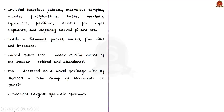The city had luxurious palaces, marvelous temples, massive fortifications, markets, aqueducts, stables for royal elephants, and elegantly carved pillars. It was also known for its trade in diamonds, pearls, horses, fine silk, and brocades. But in 1565, it came under Muslim rulers of the Deccan and was subsequently robbed and abandoned. However, the ruins of the city and its historical monuments have withstood the ravages of man and time. Because of its cultural importance, it was declared a UNESCO World Heritage Site, known as the Group of Monuments at Hampi. This historic town is also the world's largest open-air museum.